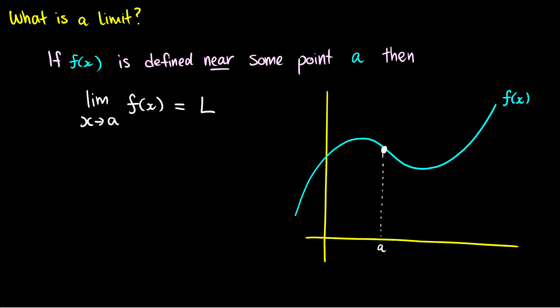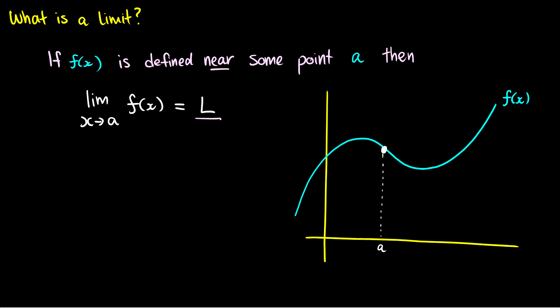Let's talk notation first, and then we'll explain it with a diagram. If f of x is defined near some point a, then the limit as x approaches a of the function f of x is equal to some value L. Right now this is just notation, but let's put this into a graph so this definition makes more sense.